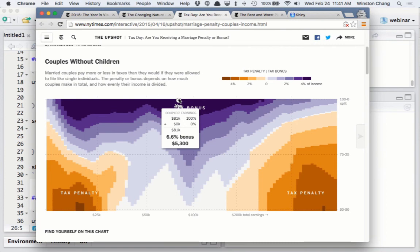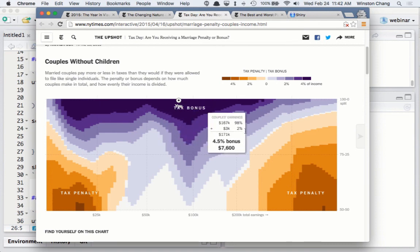Whereas if you're up here where both partners earn about the same amount, then if you file as a married couple then you actually pay more in taxes than you would if you filed single.